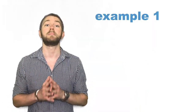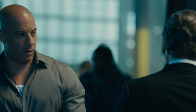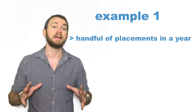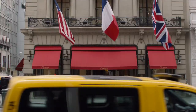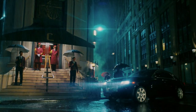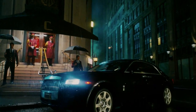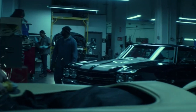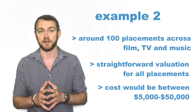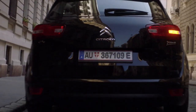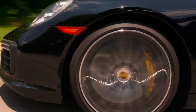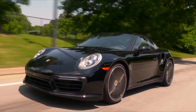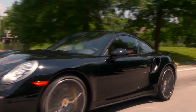We'll start with a basic example of a small brand that's done a few product placements in a year. In this case, we would suggest simply doing a valuation for all of their placements. This could range from a couple of hundred to a couple of thousand dollars. Say you're a larger brand and you've done about a hundred placements across film, TV, and music, and all you want to do is value them. In this case, we build a custom work program probably costing somewhere between five and fifty thousand dollars, depending on the number of placements.